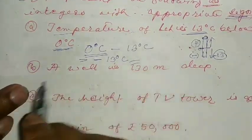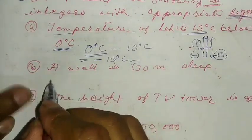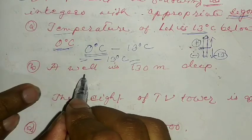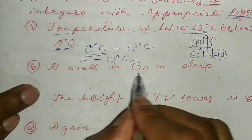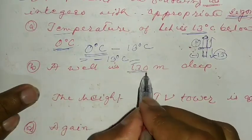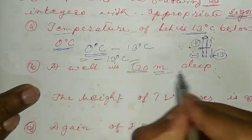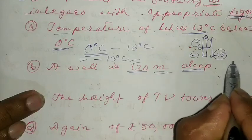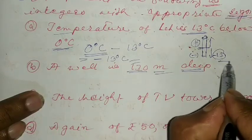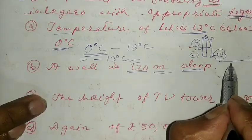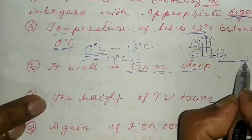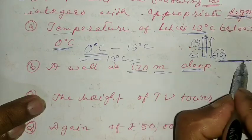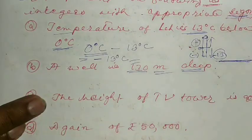Now we move to question number B. The question is: a well is 130 meters deep. Deep means the level of land is lower — this is the level of land.